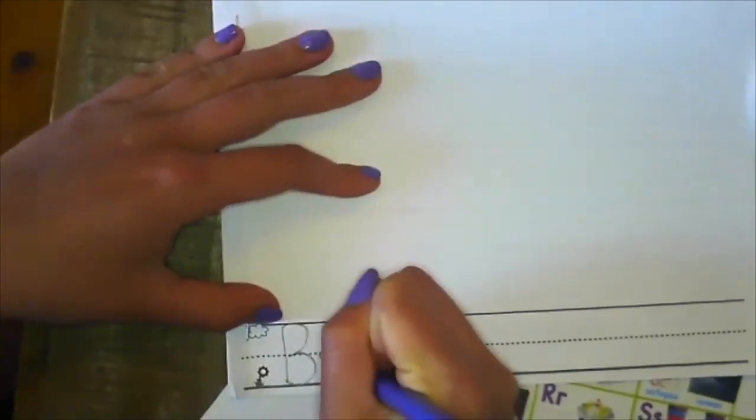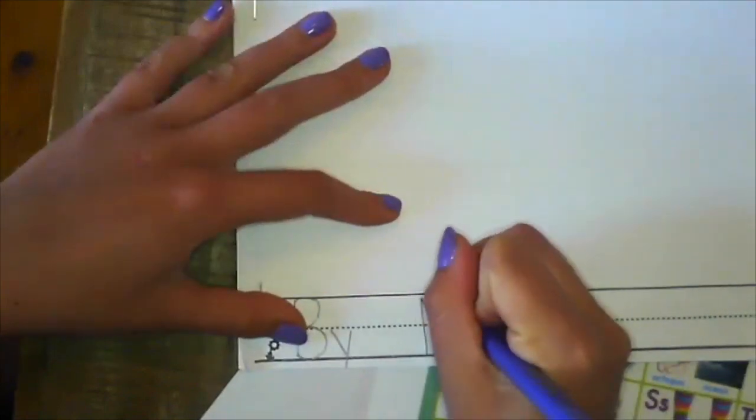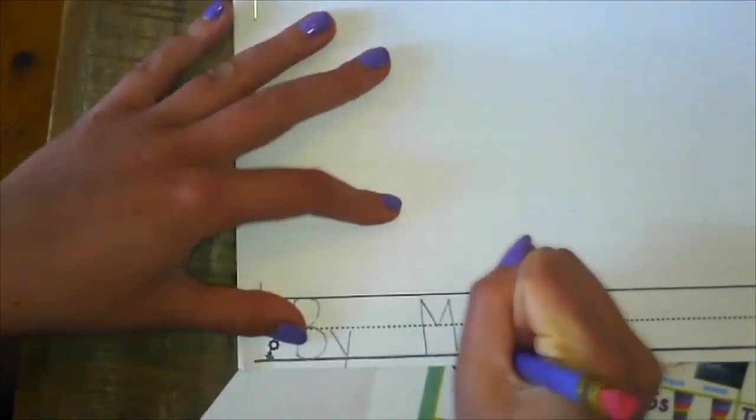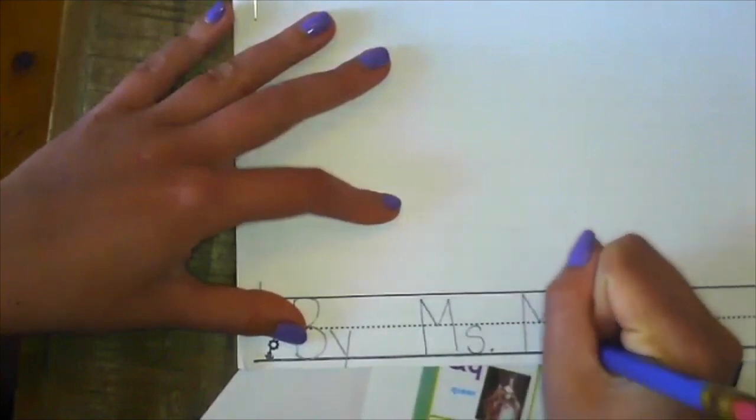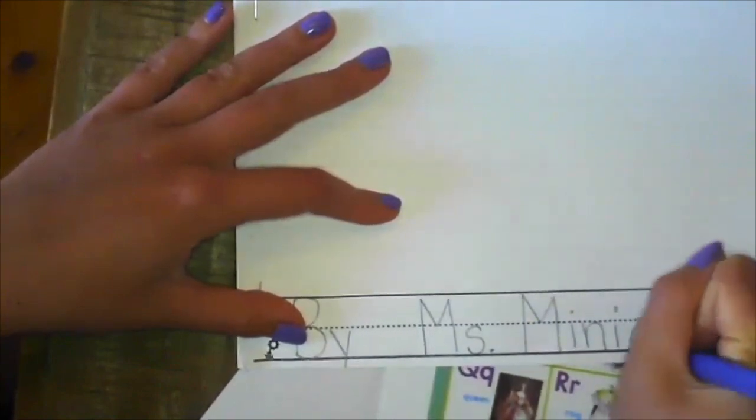BY, B-Y spelled BY, BY, BY, Miss Minion. Should you write Miss Minion? No, you should write your name.